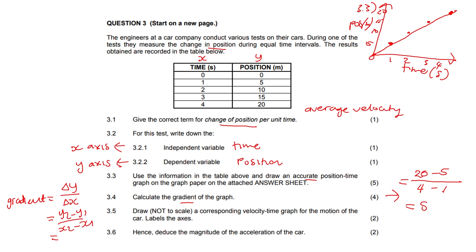3.5. Draw not to scale a corresponding velocity time graph for the motion of the car. Label the axis. So when they say not to scale, they don't want you to put any numbers or connect any dots. They just want a graph to see whether you can actually understand what's a velocity time graph. You just draw a basic graph and your time is still your X axis. Please don't forget your measurement and your velocity. The velocity measurement is meters per second. If we look at this graph, do we see that it's a straight line graph increasing constantly? So our velocity is constant. So that's how you would draw a constant velocity graph.